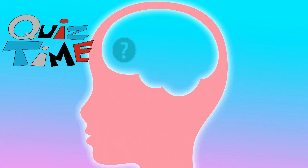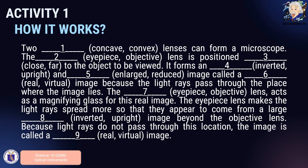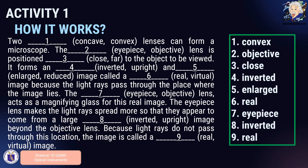Let us check how much you have learned. For the first activity titled 'How it Works,' complete the sentence with the choices provided. You may pause the video while answering and press play to check your answer. Here are the correct answers: Number 1 is convex. Number 2 is objective. Number 3 is close. Number 4 is inverted. Number 5 is enlarged. Number 6 is real. Number 7 is eyepiece. Number 8 is inverted. And Number 9 is real. Did you get them all correct? If so, congratulations!